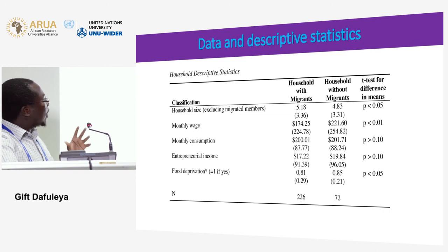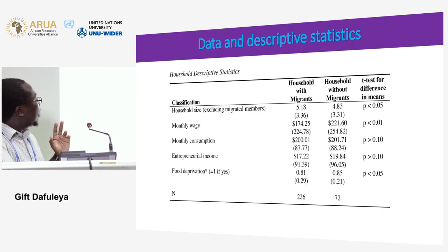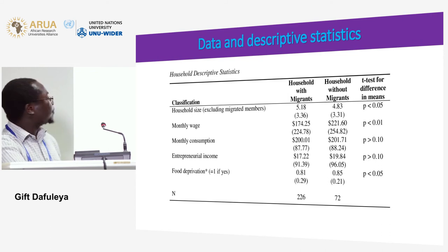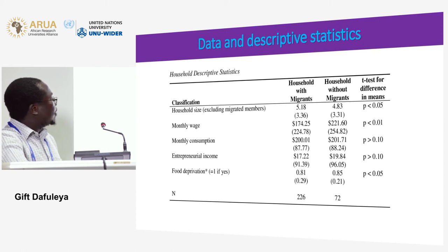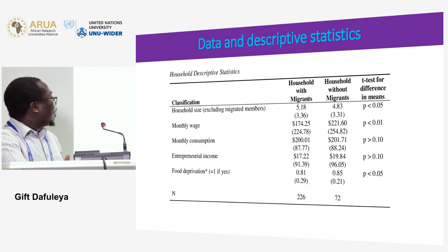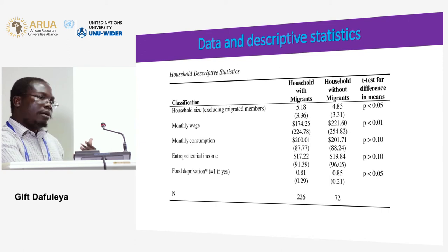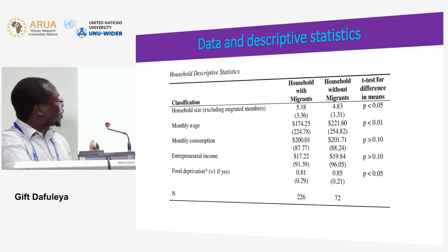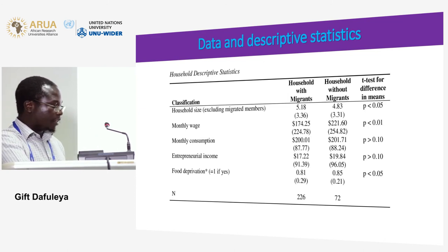Looking at household characteristics: households with migrants have lower wages at origin compared to households without migrants, yet their consumption is almost the same. Households with migrants also manage to reduce food deprivation, and this is significantly different from households without migrants even at the descriptive level.